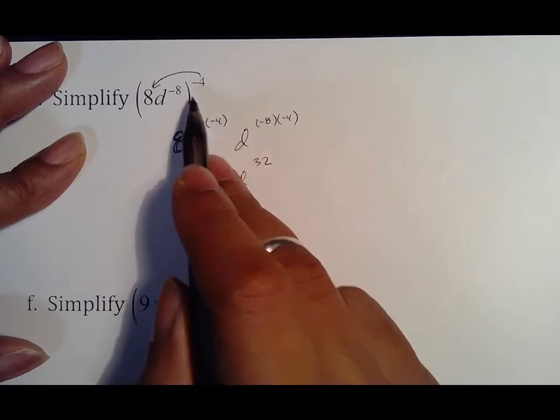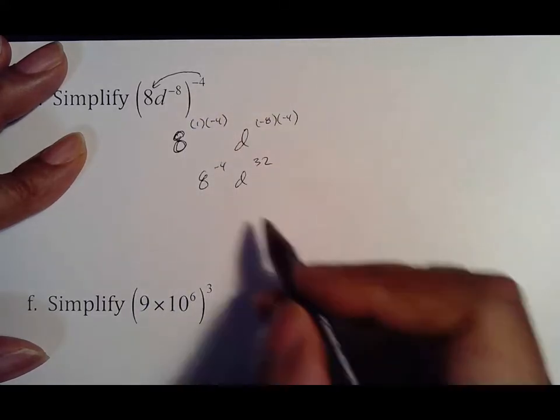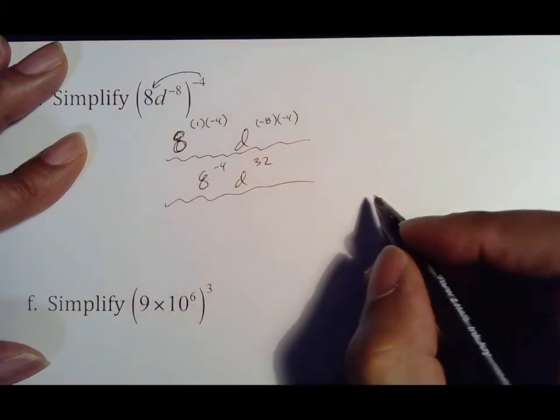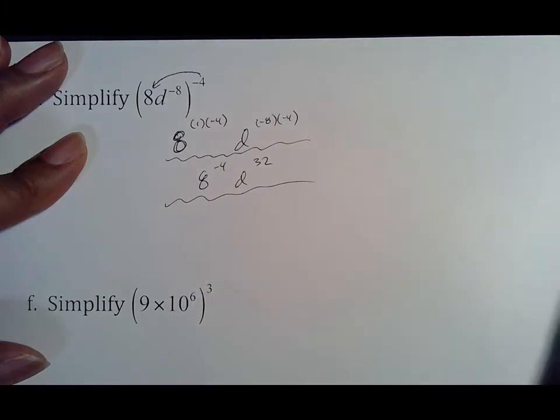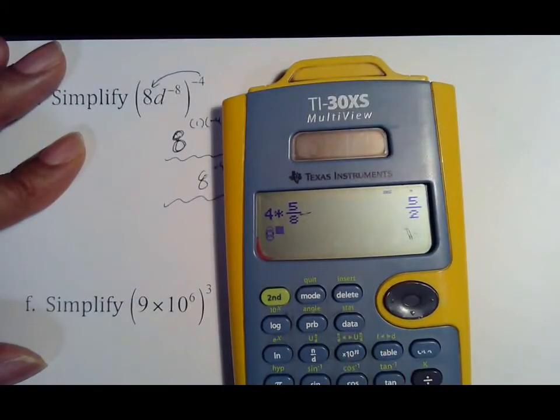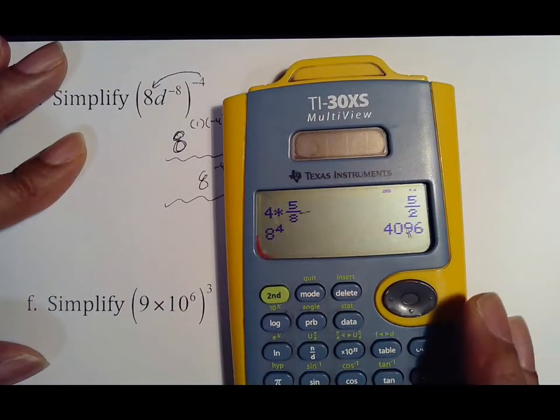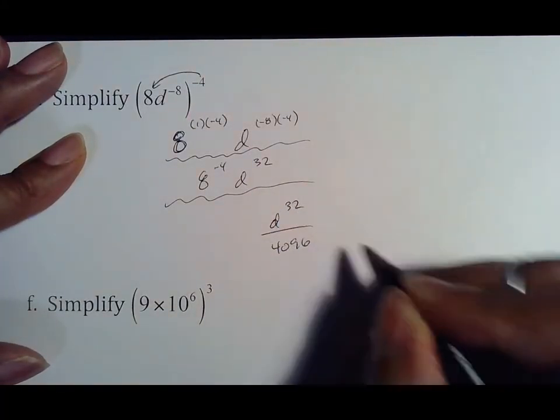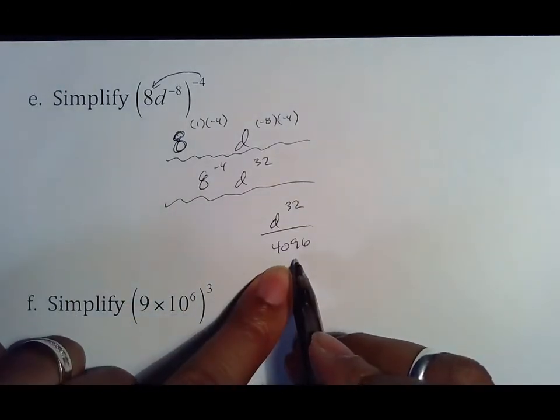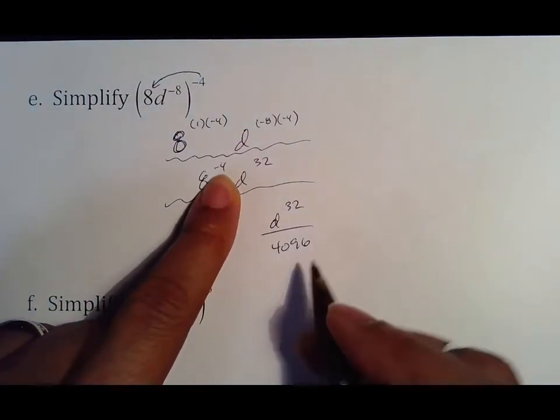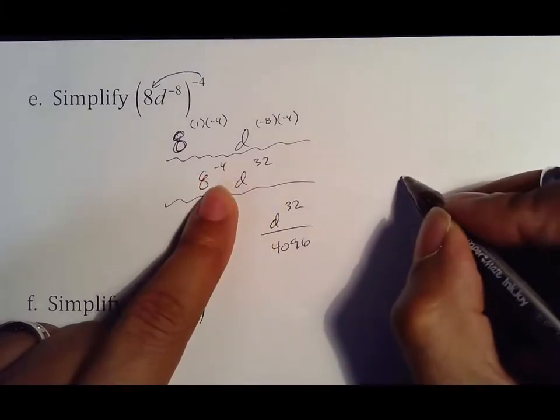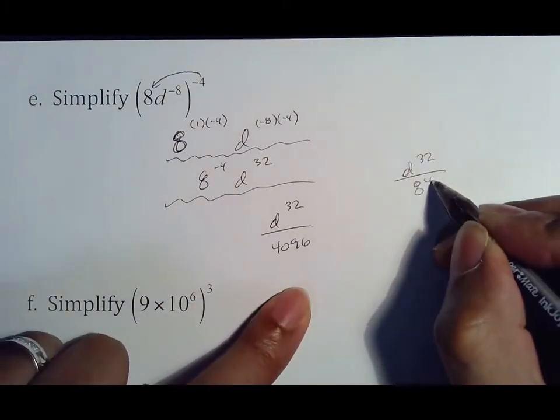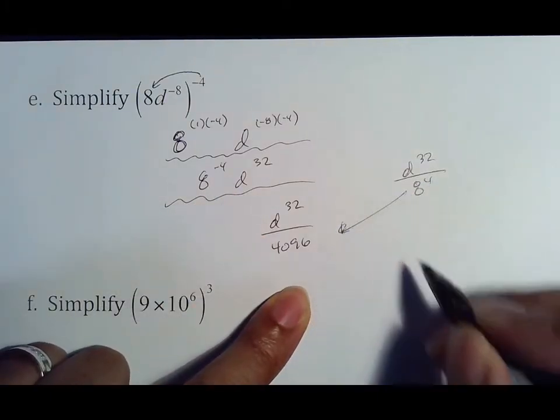Make sure you understand that. 8 to the negative 4th because 8 was just regular and we distribute that negative 4th to it, and then negative 8 times negative 4 is positive 32. That is step 1, that is step 2. Step 3 is that number needs to be happy. While we make it happy, we're also going to convert it. So it ends up being d to the 32nd over 4096. The reason this moved down is because of the 8 to the negative 4th.